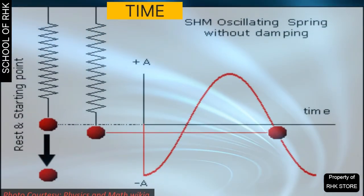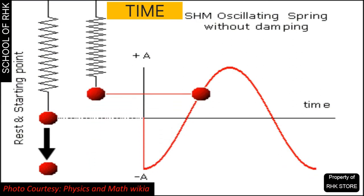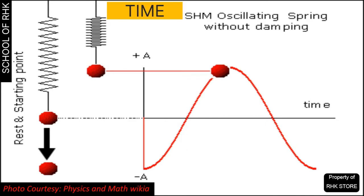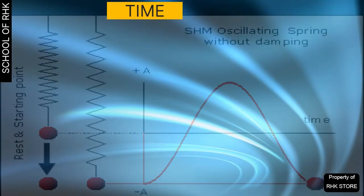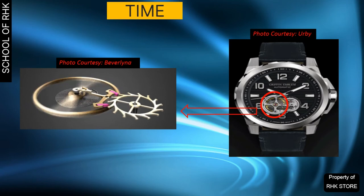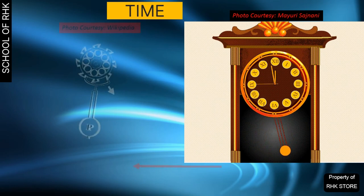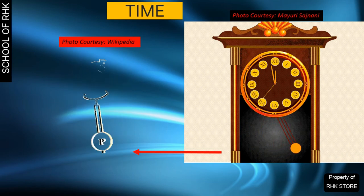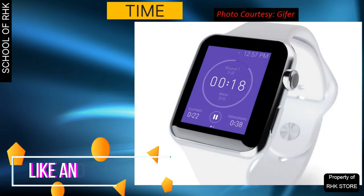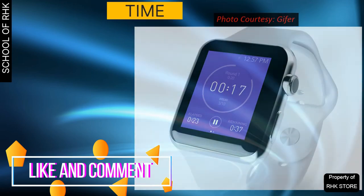Any time measuring device relies on some kind of constantly repeating oscillation, either mechanical or electronic, resulting in a periodic waveform used as an interval in timekeeping. In traditional clocks and watches, a small wheel known as the balance wheel oscillates to and fro. A swinging pendulum controls a pendulum clock, also widely known as a grandfather's clock. In digital clocks and watches, the oscillations are produced by a tiny quartz crystal.